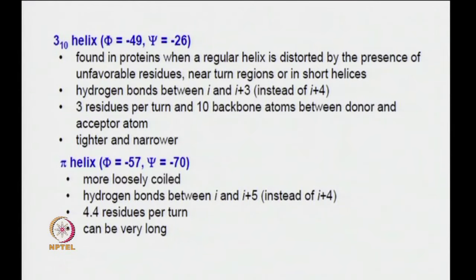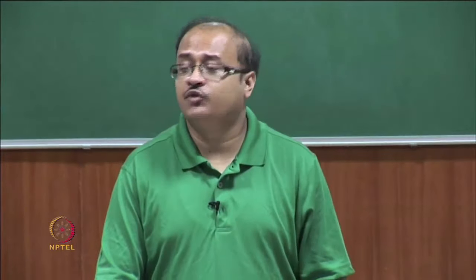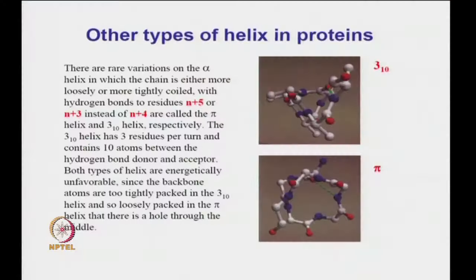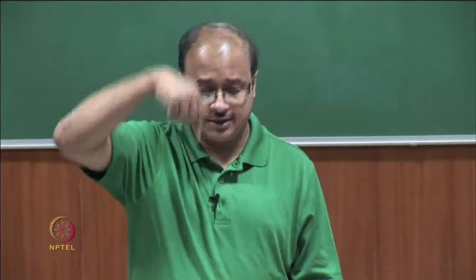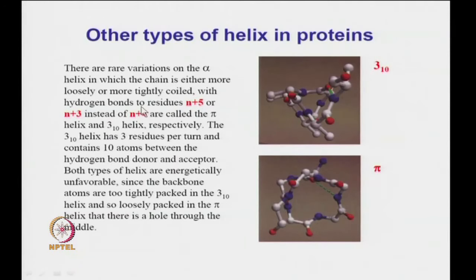The other one is referred to as a pi helix. The phi angle is -57 and psi is -70 — it is more loosely coiled. Hydrogen bonds occur between i and i+5 residues, not i+4 or i+3. It has 4.4 residues per turn. Looking from the top, these are the rare variations: this panel is the 3₁₀ helix, this is the pi helix — you can see how loose the structure looks from the top. The n+5 hydrogen bonds are for pi, n+3 for the 3₁₀ helix, instead of n+4 for the regular alpha helix.